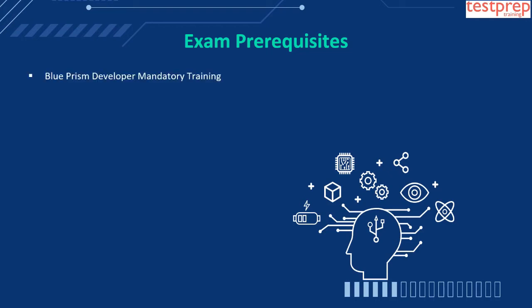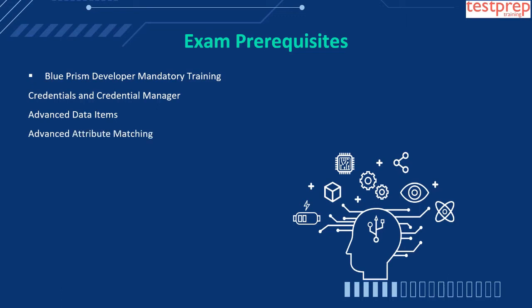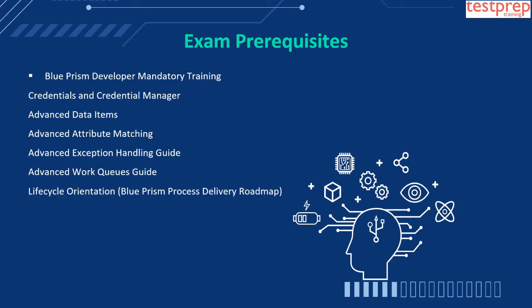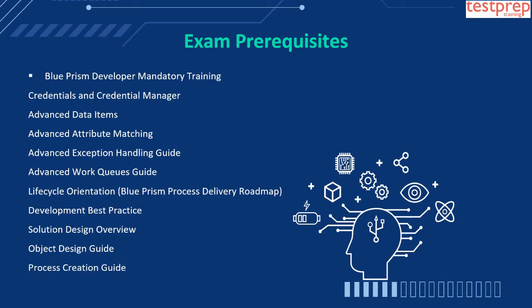Number one: Blue Prism Developer mandatory training, which includes: a) credentials and credential manager, b) advanced data items, c) advanced attribute matching, d) advanced exception handling guide, e) advanced work queues guide, f) life cycle orientation and Blue Prism process delivery roadmap, g) development best practice, h) solution design overview, i) object design guide, j) process creation guide. Number two: environment and session variables. Number three: guide to send keys and send key events. Number four: run mode guide.